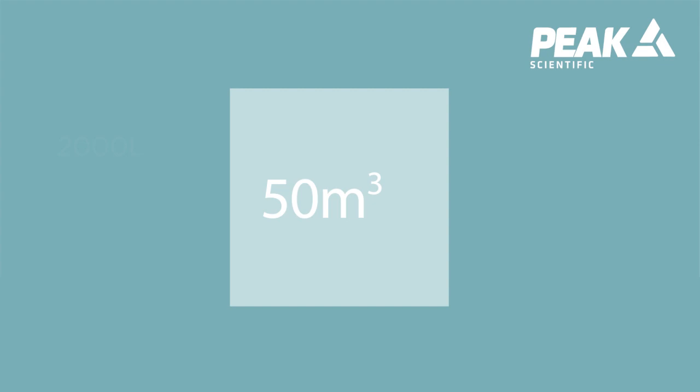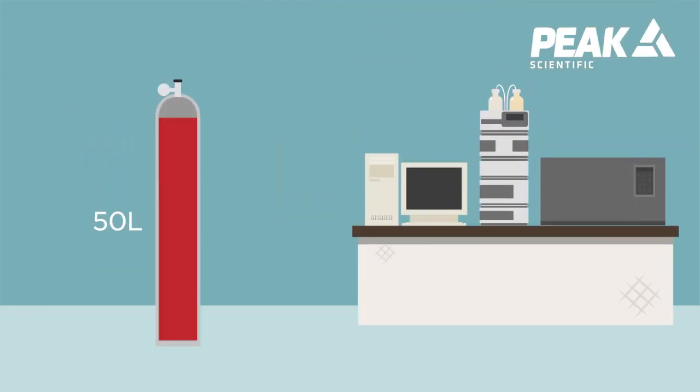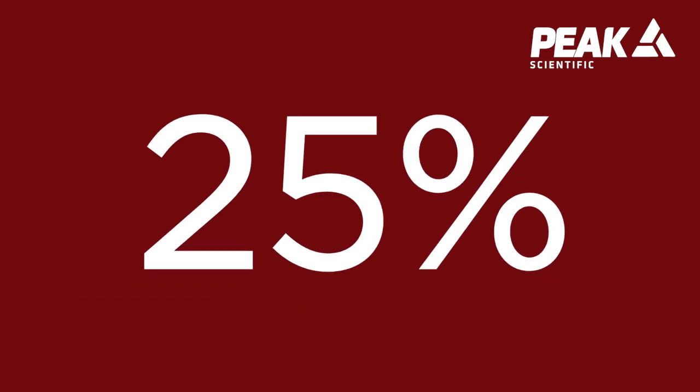In a small lab with a volume of 50 cubic meters, a 50 liter gas cylinder would have to release just over 2,000 liters of hydrogen to reach LEL. That's only 25% of the cylinder's contents.